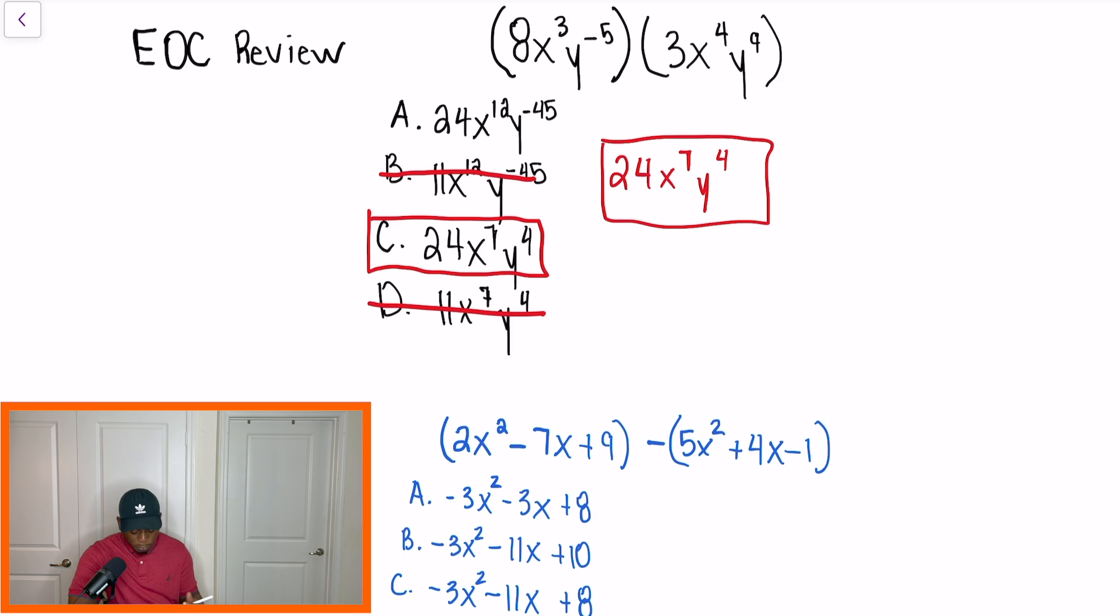The only time that we multiply exponents is typically when we have parentheses. So just out to the side, let's say we had 3X to the 4th, Y to the 9th, and then on the outside, I had an exponent. This is a type of problem where I would multiply the exponents. So just try not to forget that helpful tip.